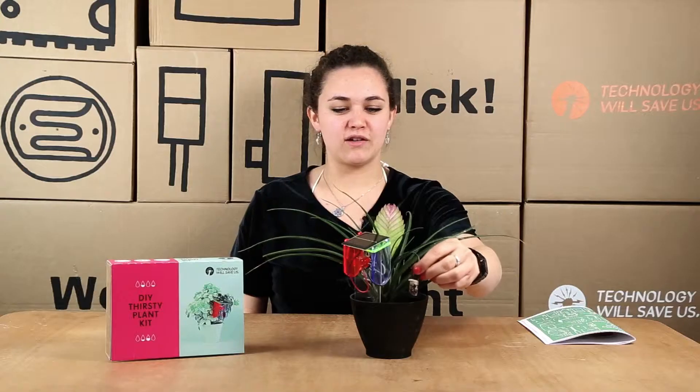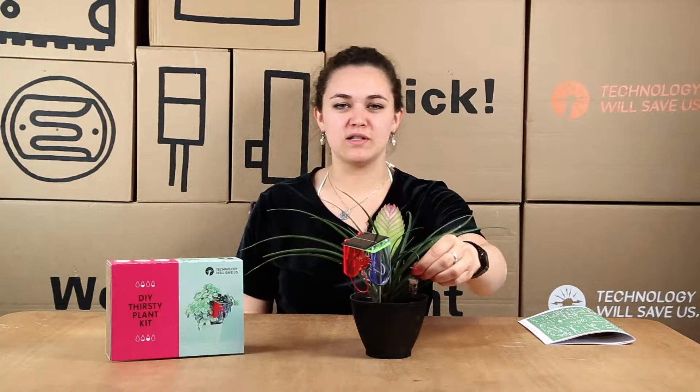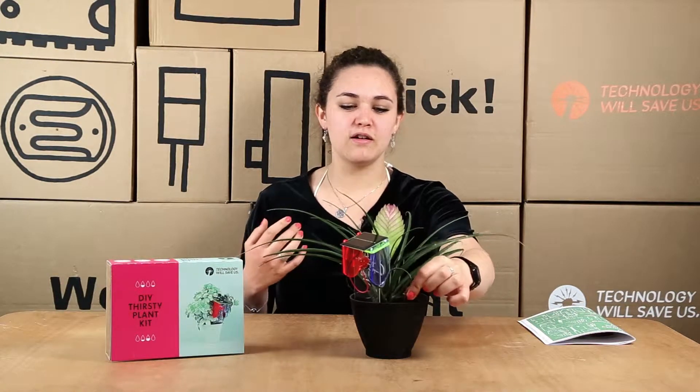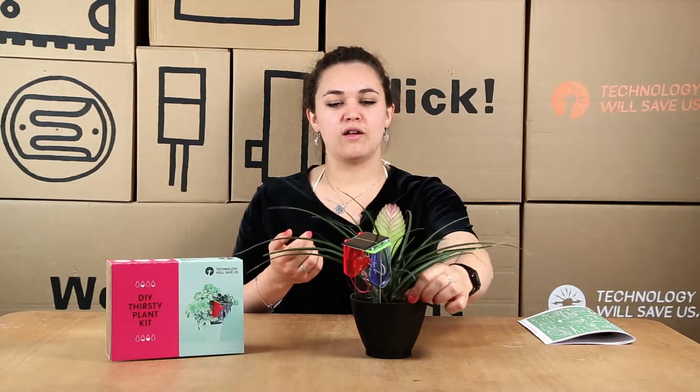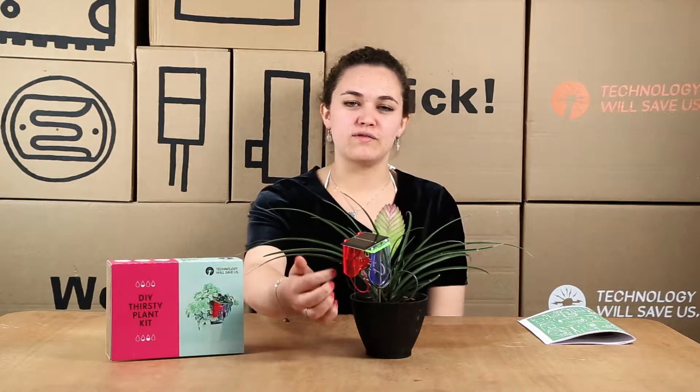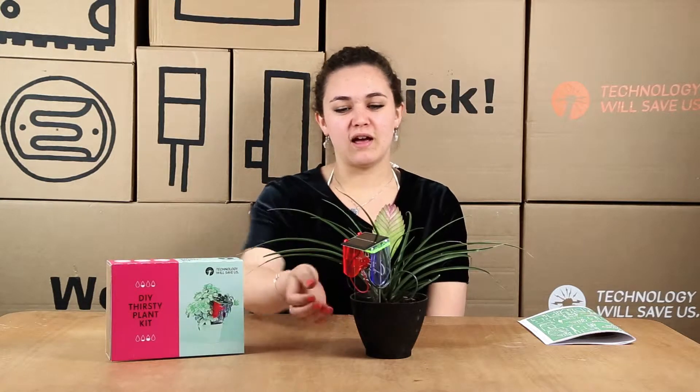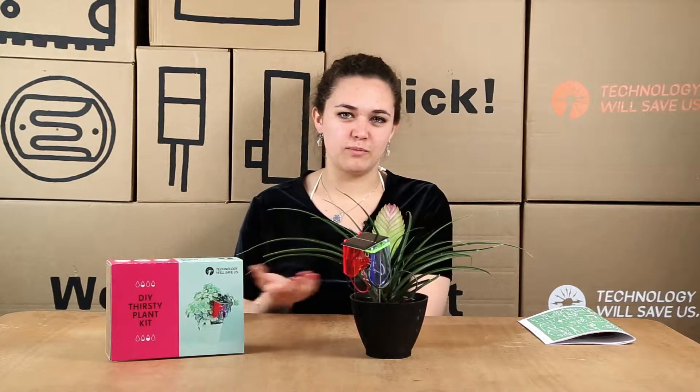So when the sensor is dry, when the soil is dry, this means the resistance is very high in the sensor which means the electricity can't pass between the two nails and therefore the electricity goes through the MOSFET and then lights up the LED and the LED blinks because it's a special type of blinking LED.